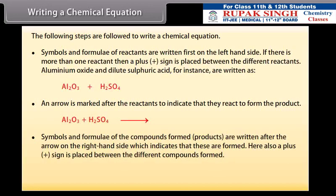Symbols and formulae of the compounds formed, products, are written after the arrow on the right-hand side, which indicates that these are formed. Here also a plus sign is placed between the different compounds formed. For example, Al2O3 plus 3H2SO4 gives Al2(SO4)3 plus 3H2O.